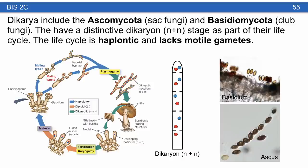The Dikarya include ascomycota and basidiomycota, each with a distinctive dikaryon — an N+N stage with a single cell containing two haploid nuclei that have not united. In basidiomycota, once fertilization happens and those nuclei fuse, you get development of a structure called a basidium with four external spores. In ascomycota, you get an ascus — a sac containing eight spores.